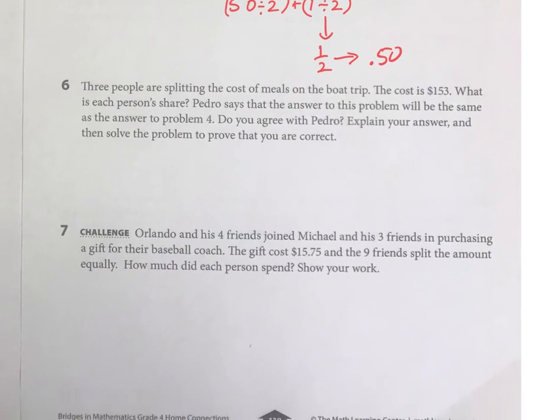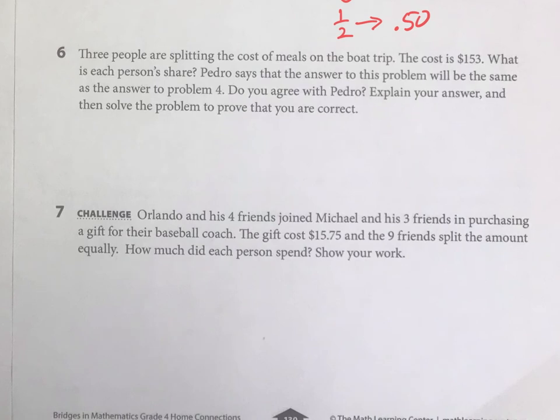And then a couple more quick ones. You've got three people, and you're doing $153 this time, and three people. So figure that out. And then, is Pedro correct? Is it the same as the answer to problem four?